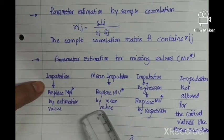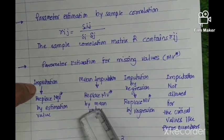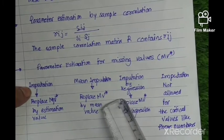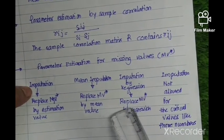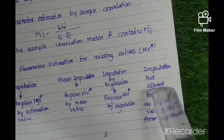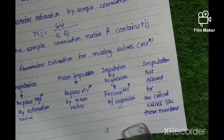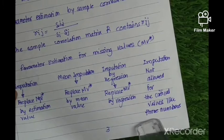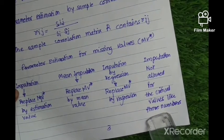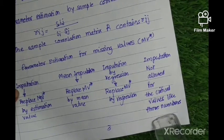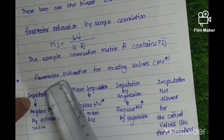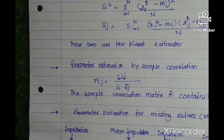Mean imputation means replacing the missing value with the mean, since the mean represents the class. A second important imputation method is regression: if two quantities are related, replace the missing variable using regression. If imputation is not allowed for critical values, retain the original value and mark it as not allowed — for example, in financial sectors where a mobile number is a key field and is absent, do not impute it.